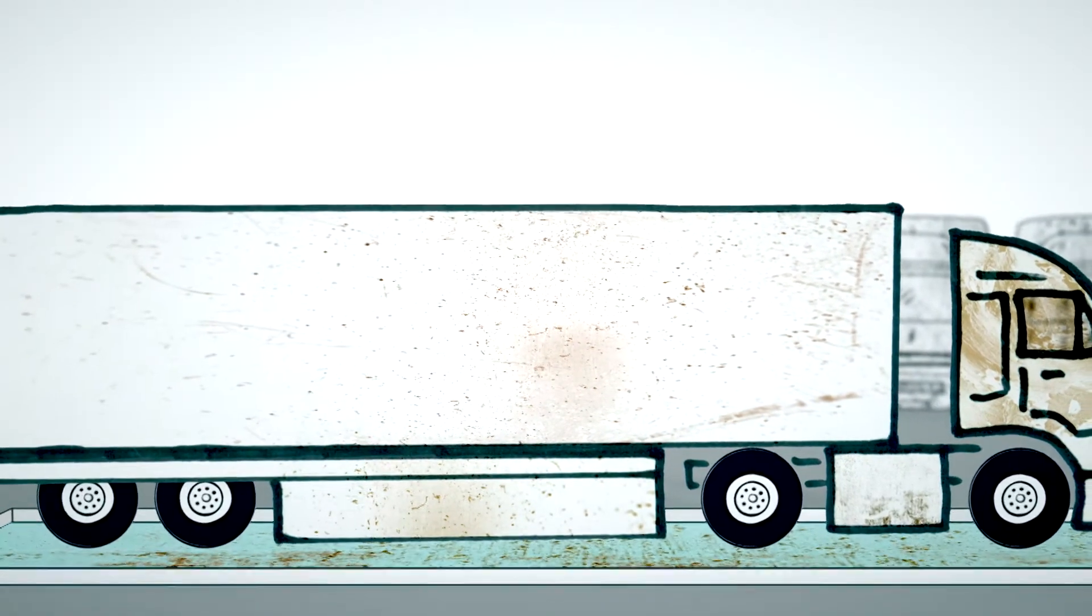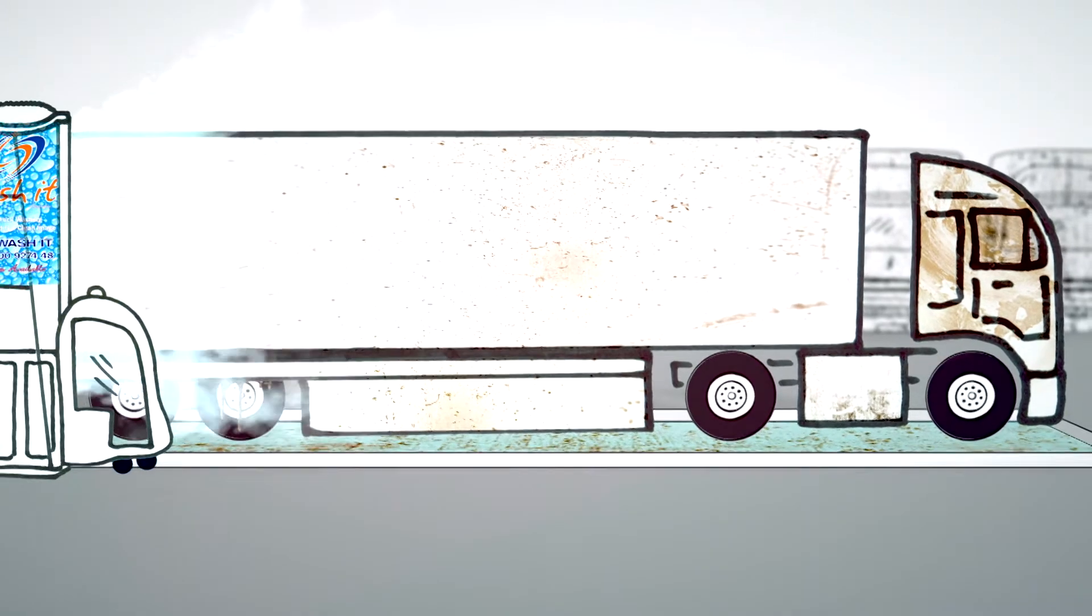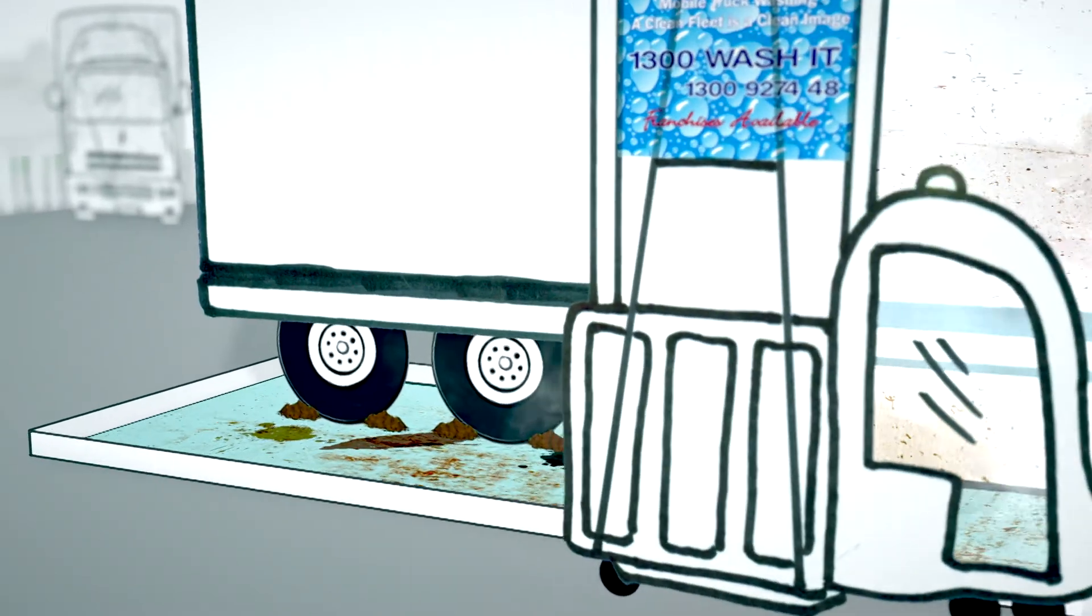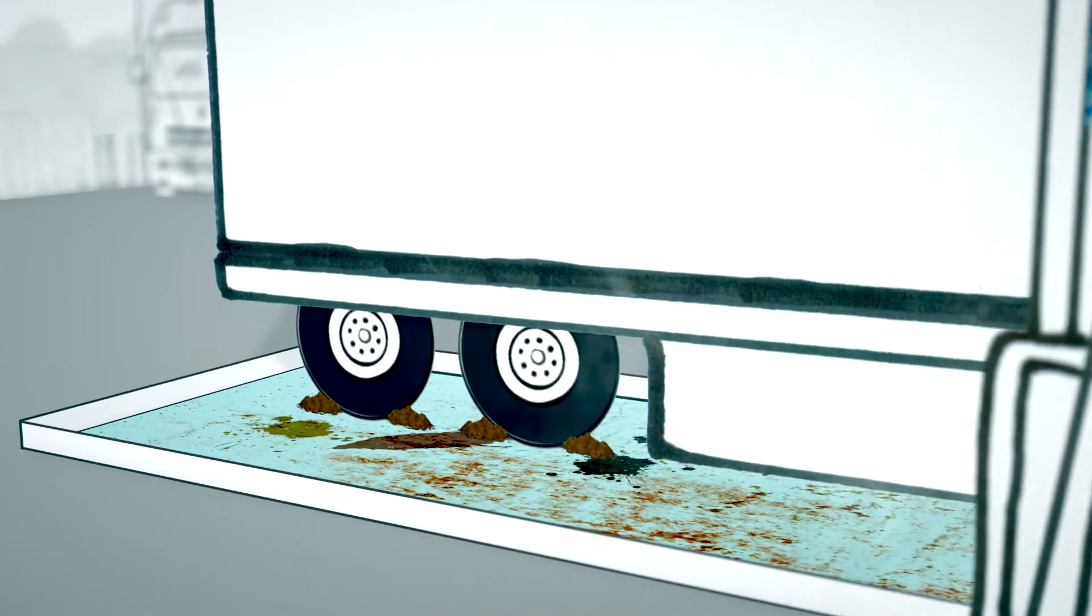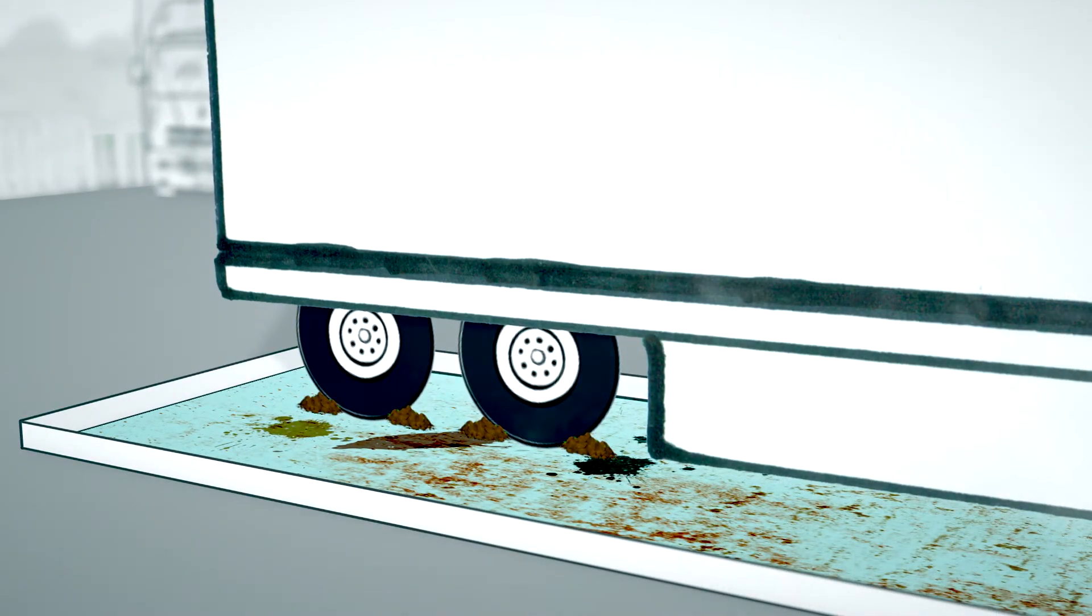The trucks are driven onto an environmental mat to avoid things like oil, grease, dirt, grain, etc. from going into the storm water drains, as well as unsightly dirty patches on the tires where they meet the ground.